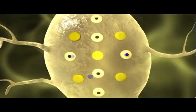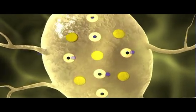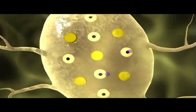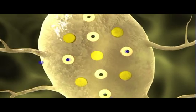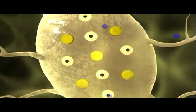In an unstimulated neuron, only potassium ions can cross the membrane, traveling through specific proteins called potassium channels. Although sodium channels are also present, in unstimulated neurons, they remain closed.